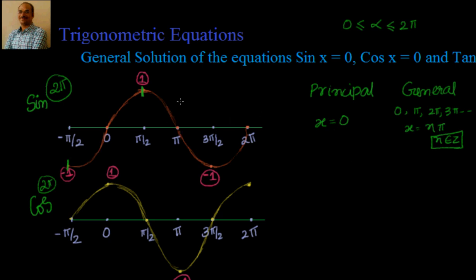Another way to see this without looking at the graph: using the four quadrants — all, sin, tan, cos — you know that sin is positive in the first and second quadrants. You also know that sin π is 0, sin 2π is 0, sin 3π is 0, sin 4π is 0, sin 5π is 0. For all integer multiples of π, sin is 0, that's why the general solution is nπ.